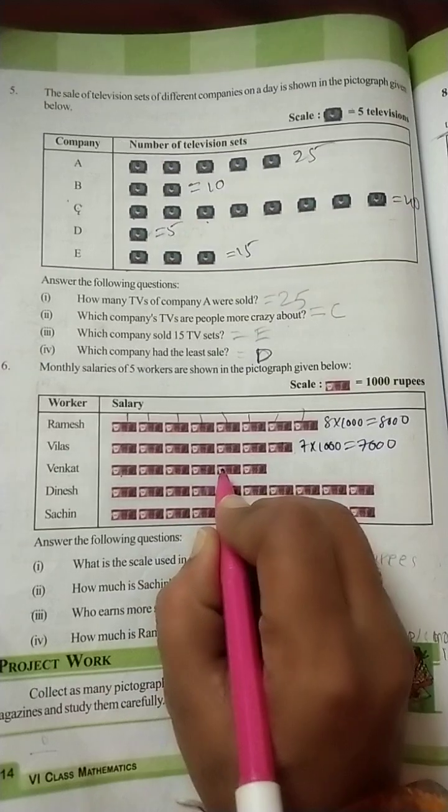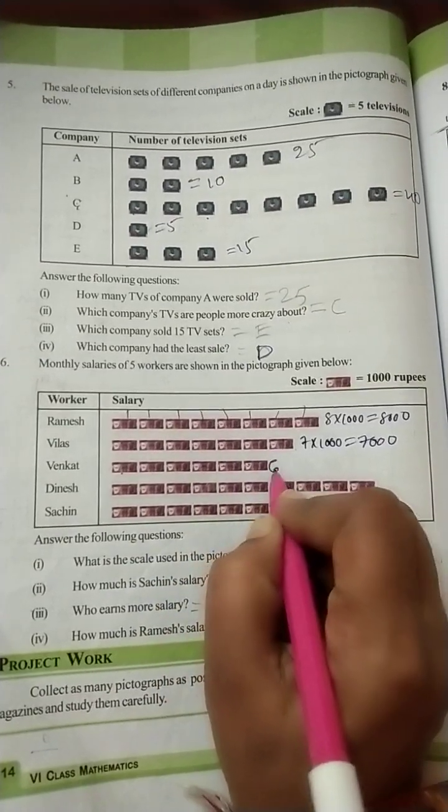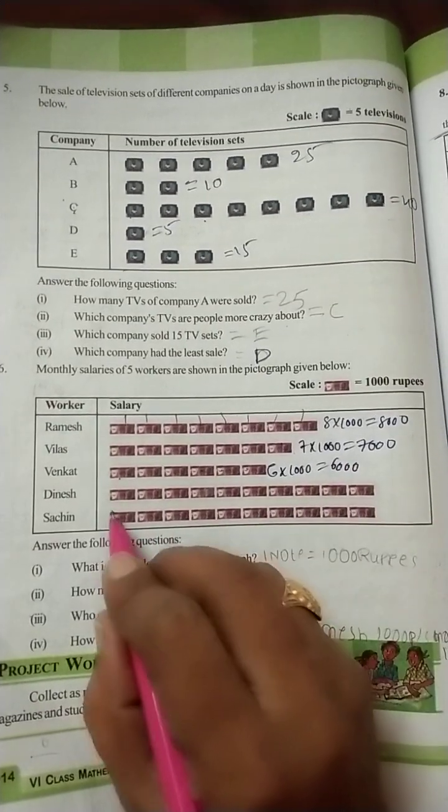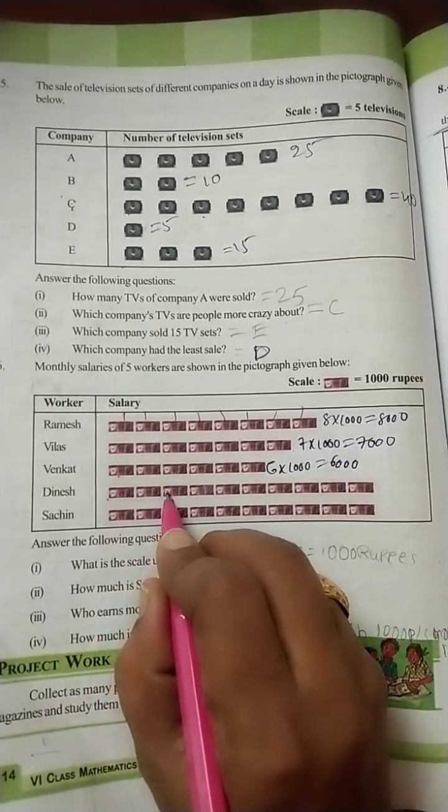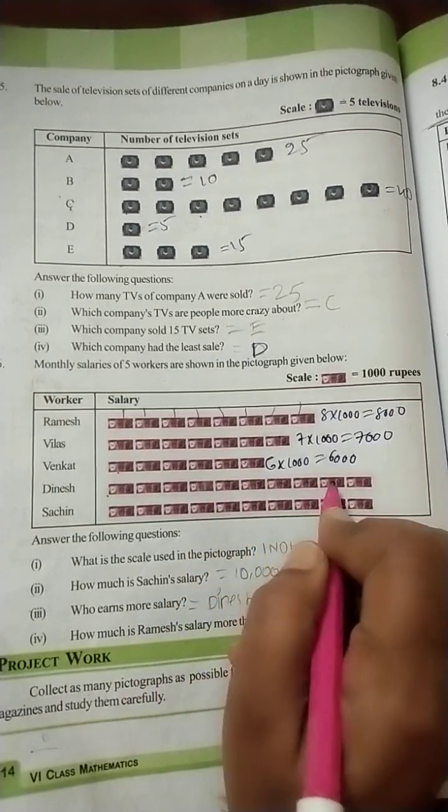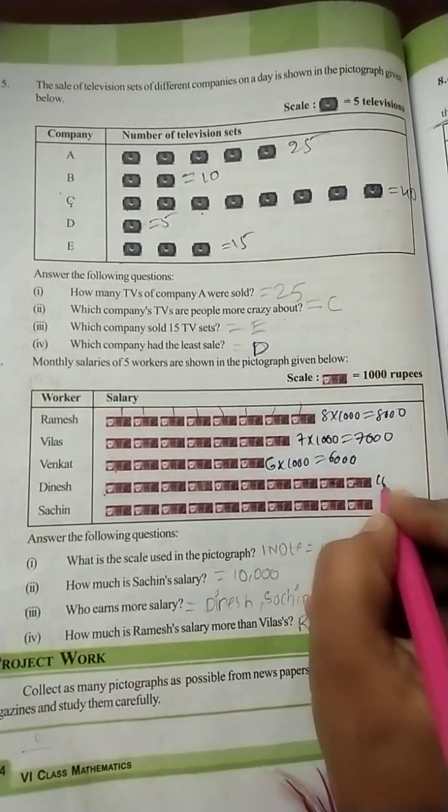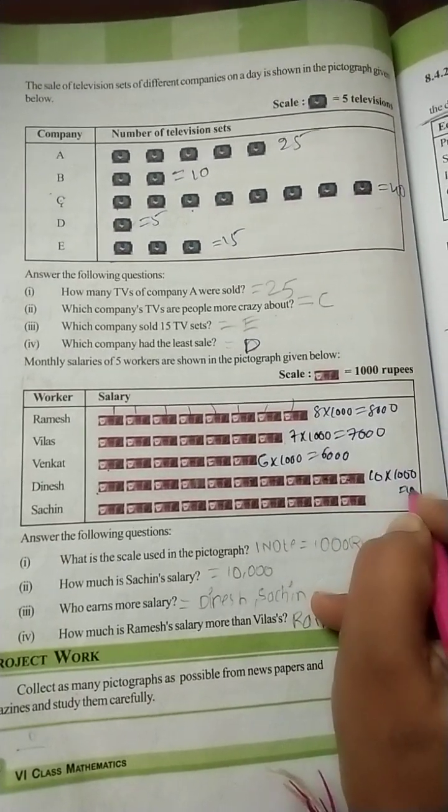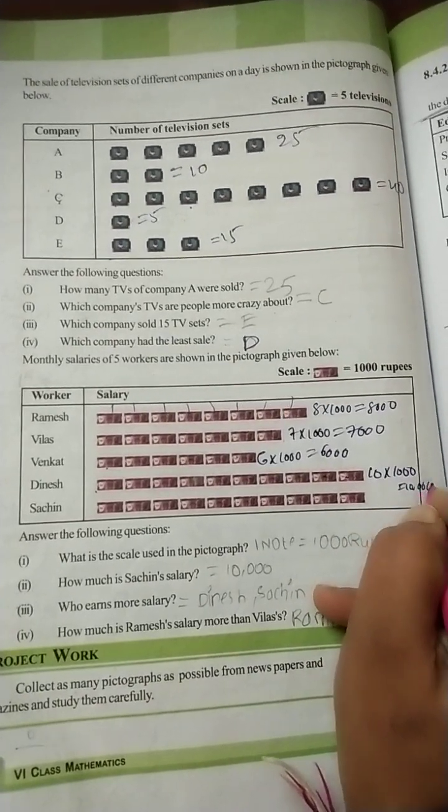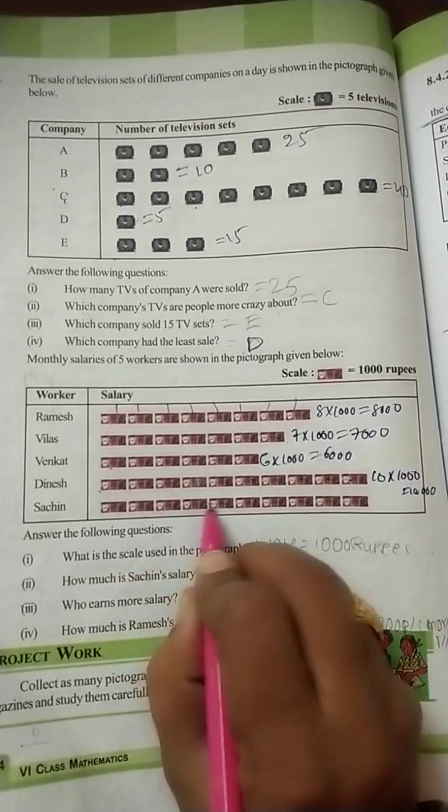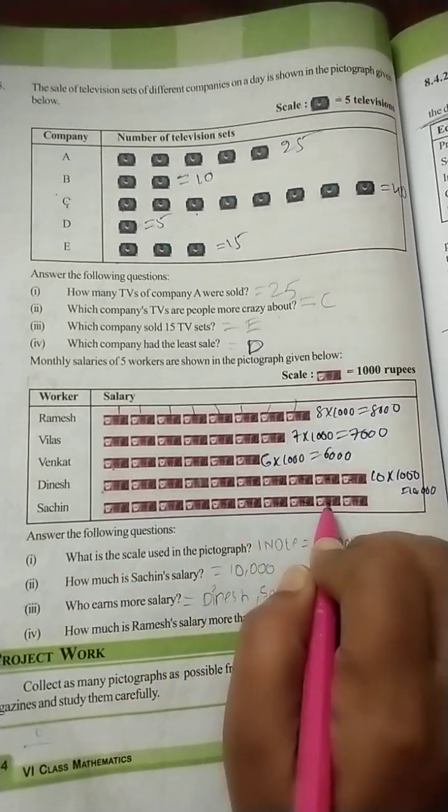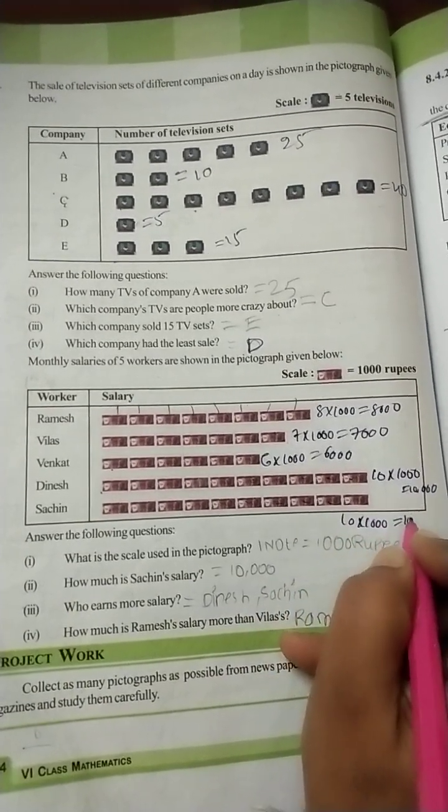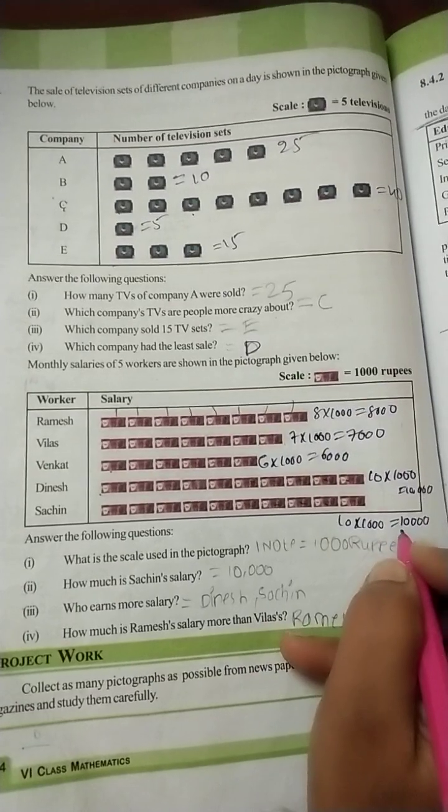Next, 1, 2, 3, 4, 5, 6. Six into 1000, 6000. Next, 1, 2, 3, 4, 5, 6, 7, 8, 9, 10. Ten into 1000, 10,000. Now 1, 2, 3, 4, 5, 6, 7, 8, 9, 10. Ten into 1000, 10,000. Same salaries.